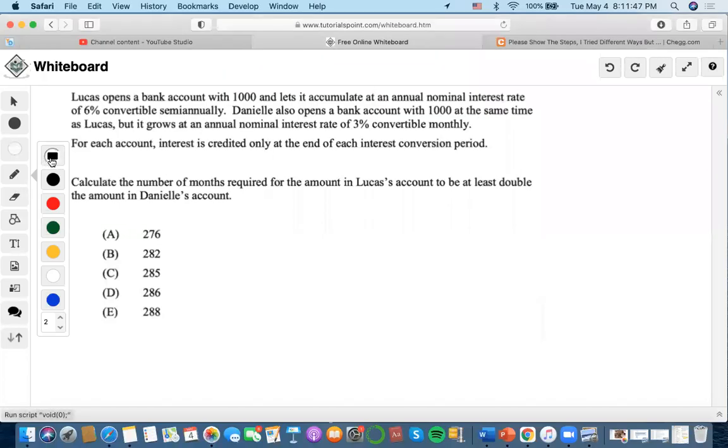Okay, so for this one, Lucas opens a bank account of $1,000 and accumulates an annual nominal interest rate of 6% semi-annually. 6 divided by 2 is 3% semi-annually to the number of years. Danielle also opens a bank account with $1,000 at the same time, but grows at an annual nominal rate of 3% monthly.